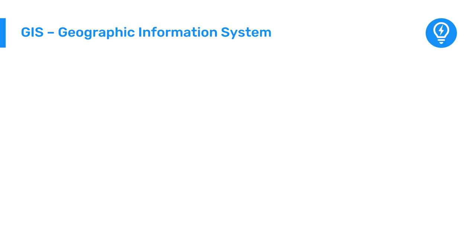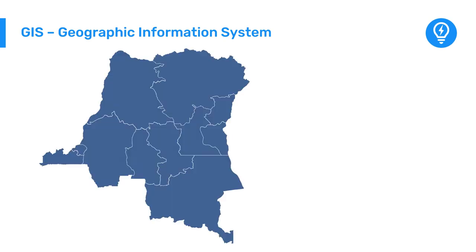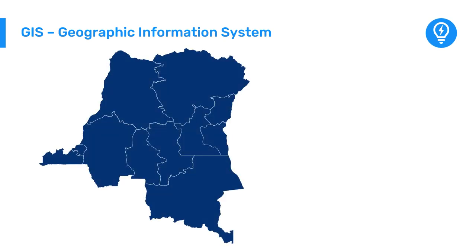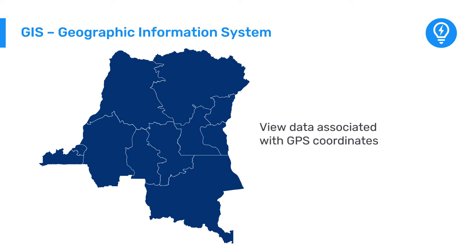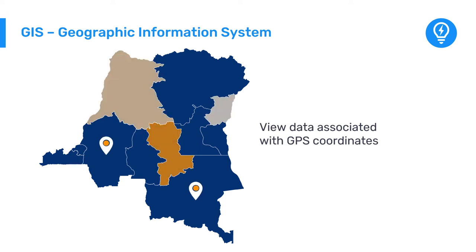Let's start with the basics. Maps in DHIS-2 is the Geographic Information System, or GIS, that allows you to view data associated with GPS coordinates that relate to points or areas on a map.